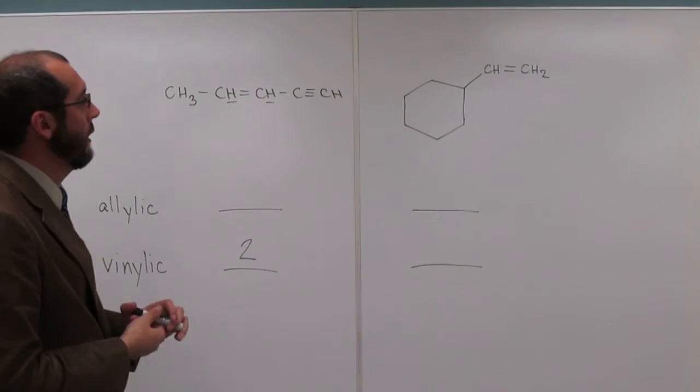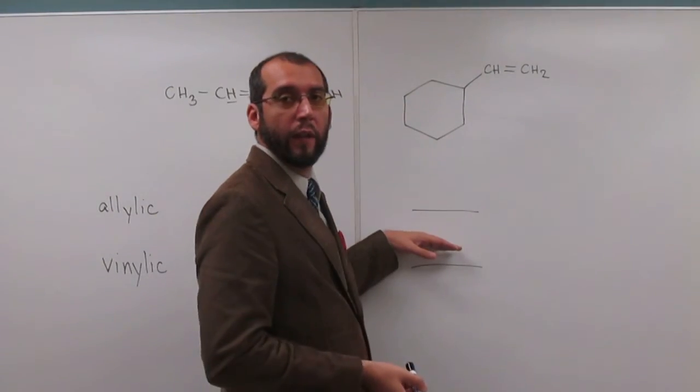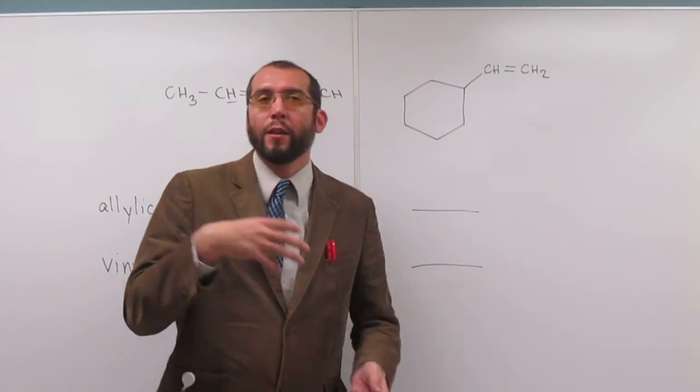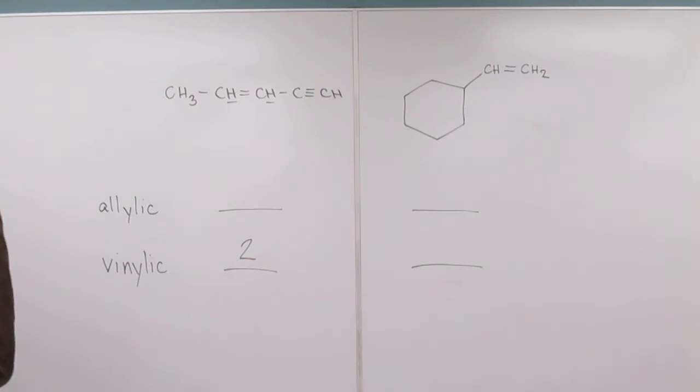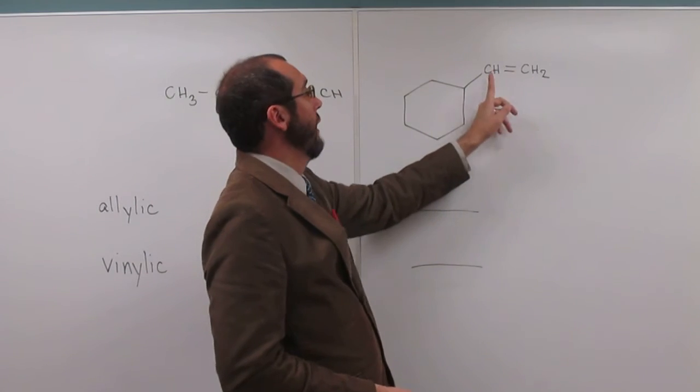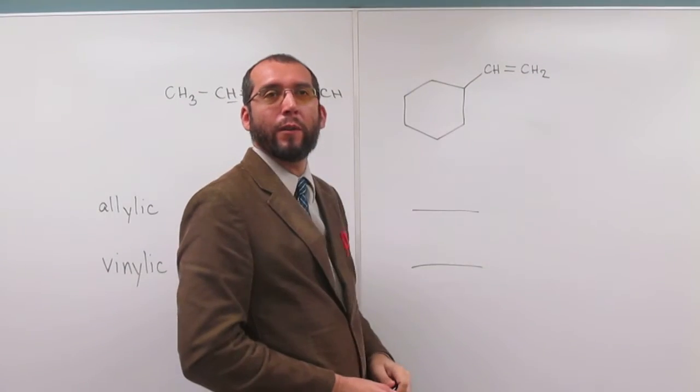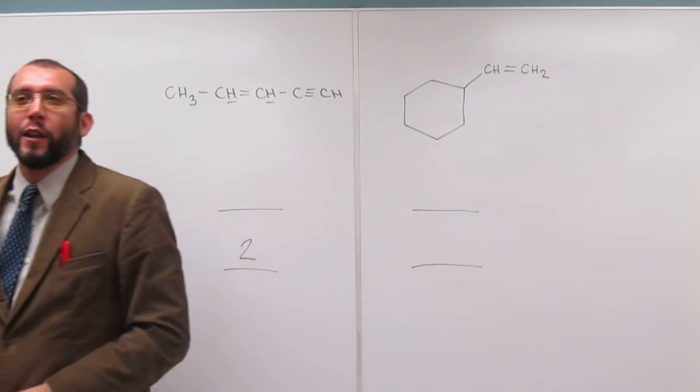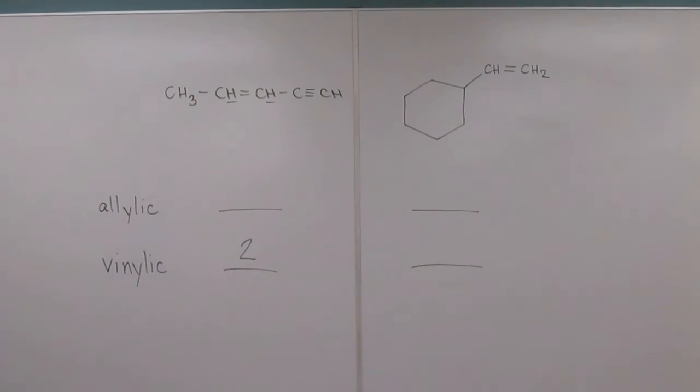So let's go over to this one and look for the vinylic hydrogens. What did we say? They're directly attached to the double bond. So how many do we have directly attached to the double bond? One, two, and then three. Everybody okay with that? Or should I have let you guess it? We good?